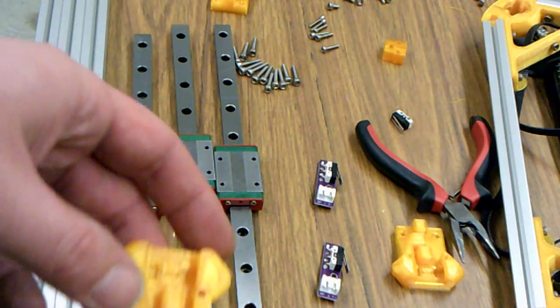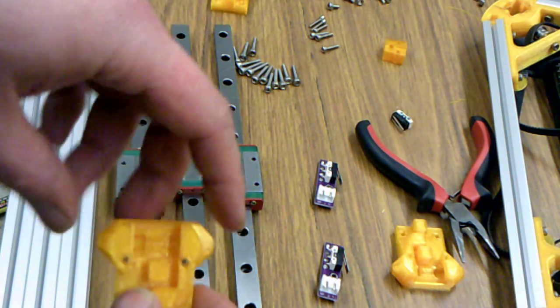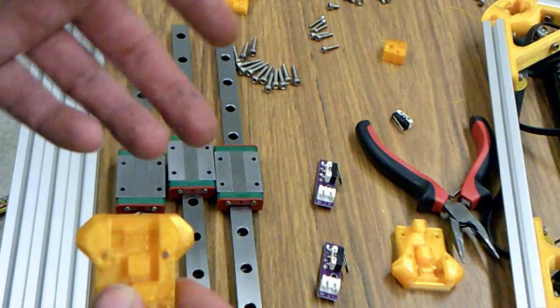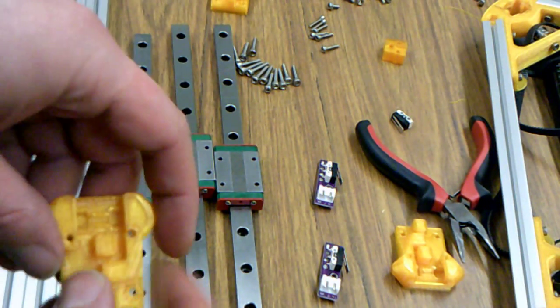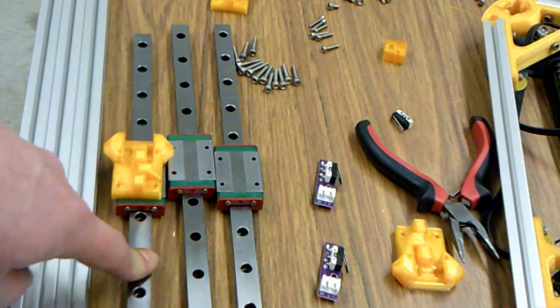The other thing that you're going to need are your carriage belt holders. Over here and here, this is where the smooth rod connects. And it's going to connect to the linear rail there.